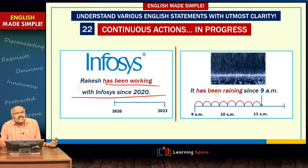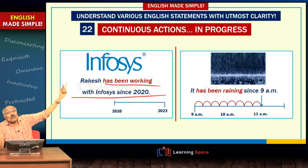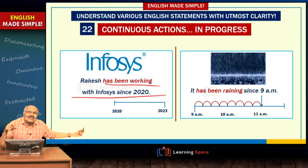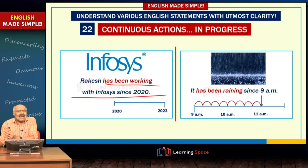Suppose Rakesh recently left Infosys and joined another company — you say 'Rakesh has worked with Infosys for three years.' But if Rakesh left the job 10 years ago, you say 'Rakesh had worked with Infosys.' 'Has worked' is used when a recent action has some connection with the present. 'Has been working' means he is still working. 'It has been raining since 9 AM' means the rain has not stopped.